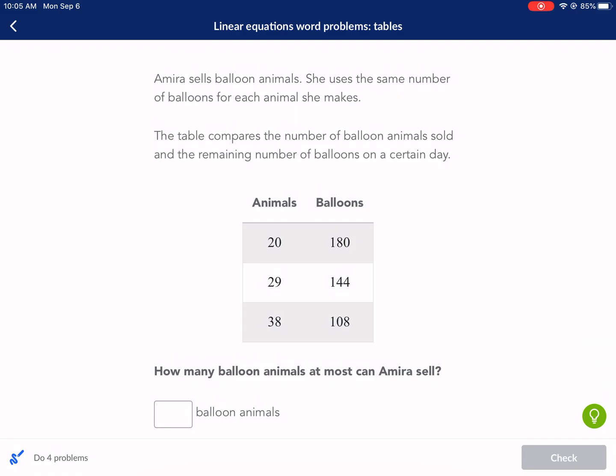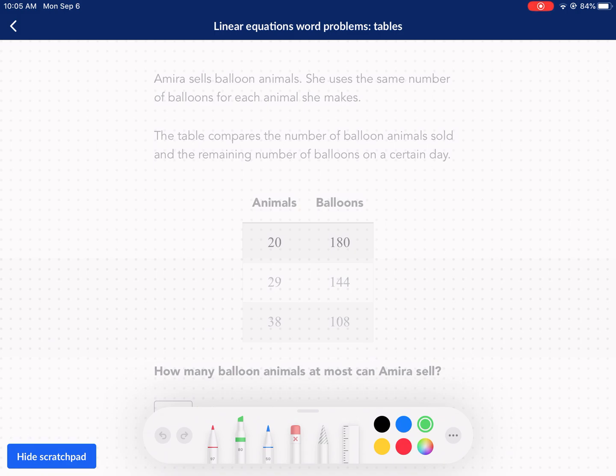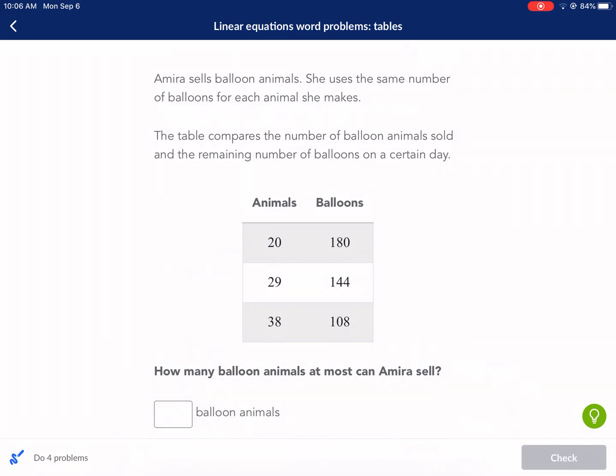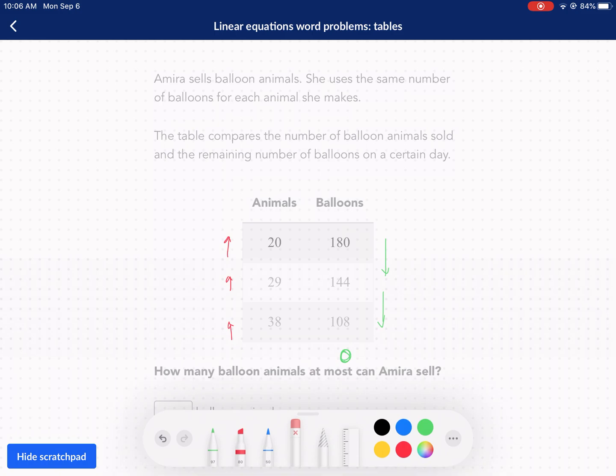In this first example, we have Amira sells balloon animals. She uses the same number of balloons for each animal she makes. The table compares the number of balloon animals sold and the remaining number of balloons on a certain day. So then we have this chart here. You can see animals are on the left. Now we want to figure out how many balloons do you use per animal? What is the rate?